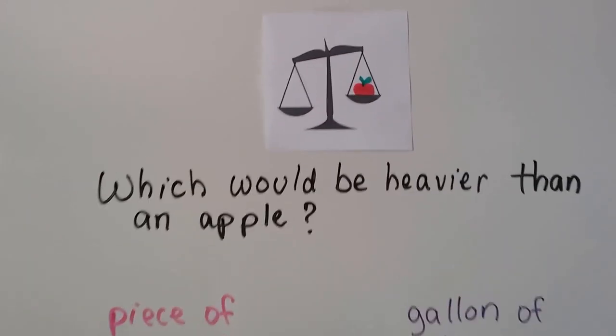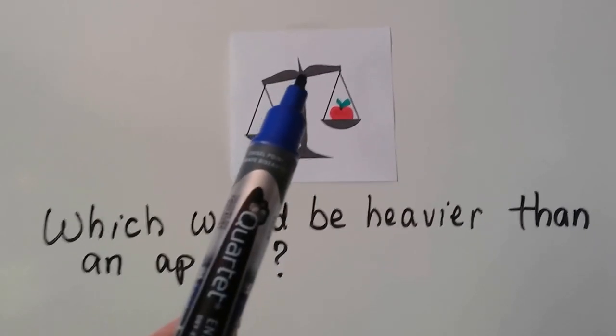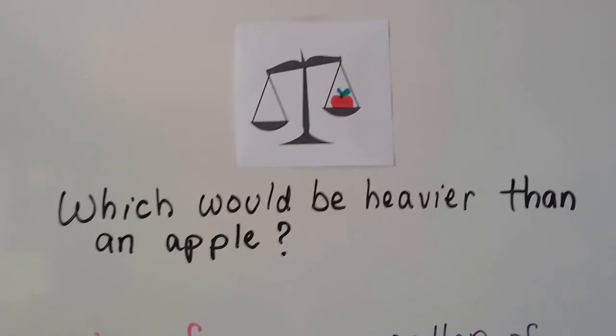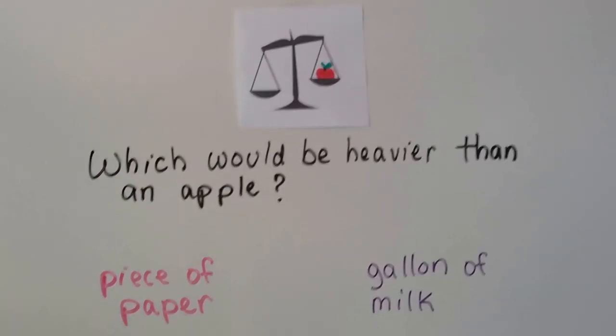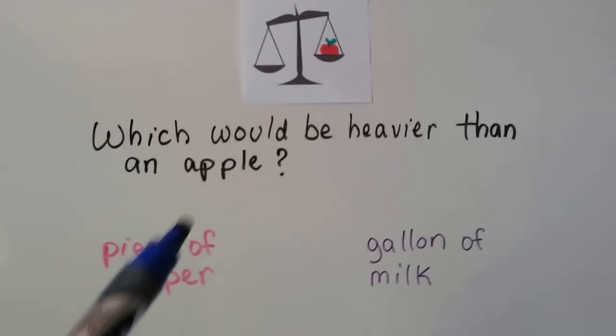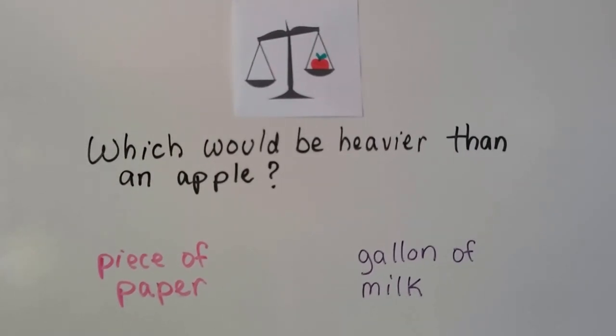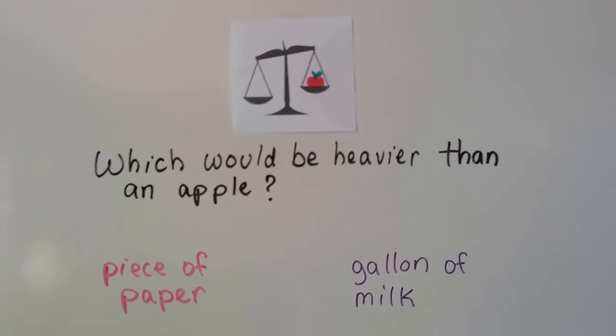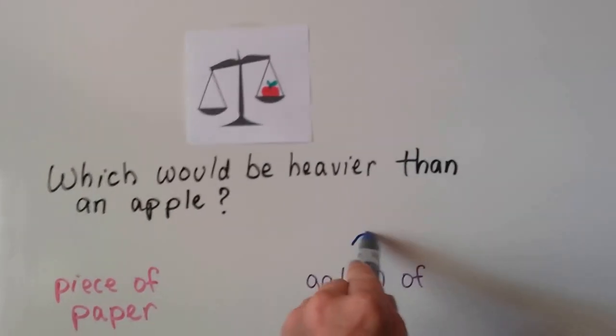So if we had a pan scale like this, and we had an apple in here, and it tipped so that this side was heavier, which would be heavier than an apple? What could we put in here that would make it look like that? If we put a piece of paper in this side, would it be heavier than an apple? No. How about a gallon of milk? Yeah, a gallon of milk is pretty heavy. That's heavier than an apple.